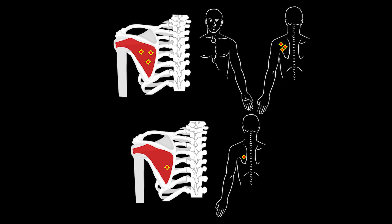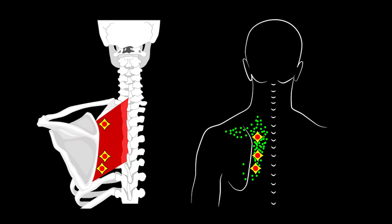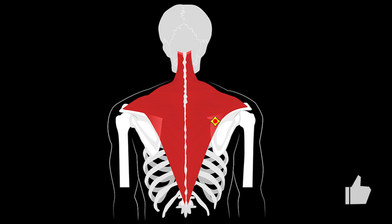Trigger points of the infraspinatus muscle cause deep pain along the front of the shoulder and in the shoulder joint that goes down the anterior lateral surface of the arm, extending to the lateral side of the palm and sometimes extending to the fingers of the hand or to the suboccipital area. A trigger point located in the tendon-muscle junction area near the vertebral edge of the scapula causes soreness in this area, similar to the reflected pain coming from trigger points of the rhomboid muscles and the fourth trigger point located in the middle part of the trapezius muscle.